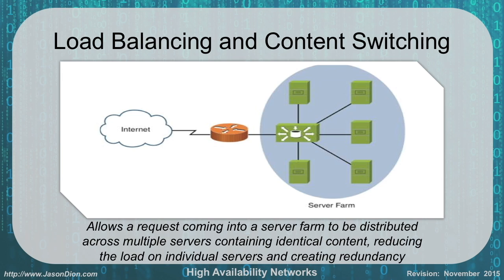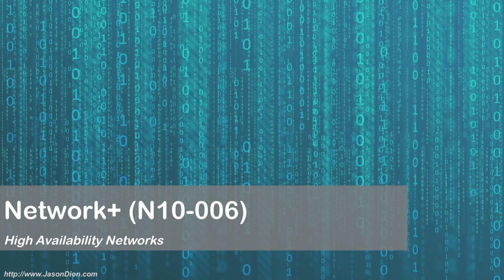Load balancing and content switching is another approach. If we have multiple servers doing the same function in a server farm, distributing the load across those machines gives us redundancy. If one of five servers went down, we might see a slight slowdown but would still service all traffic. If only one machine did it all and went down, we'd be out of luck. So load balancing and content switching is another key way to achieve redundancy in high availability networks.